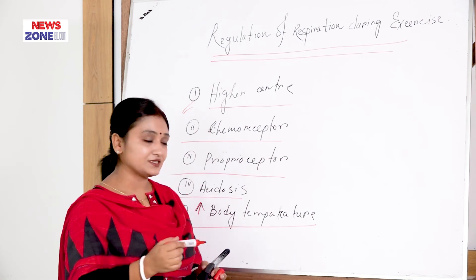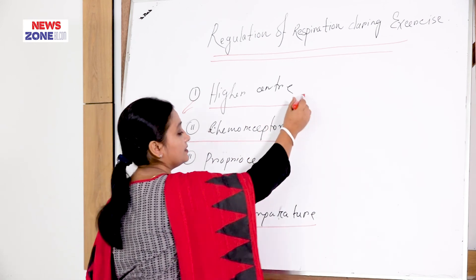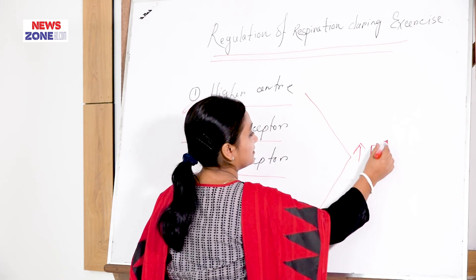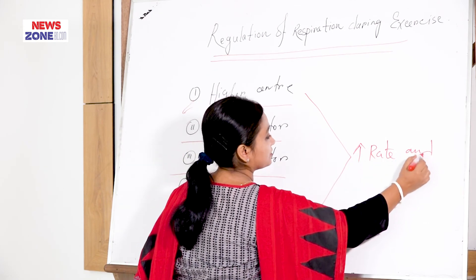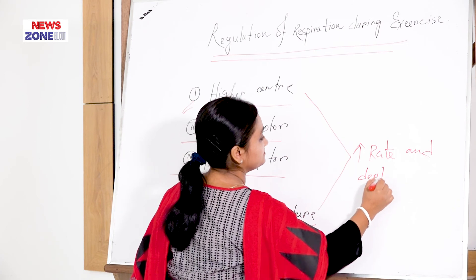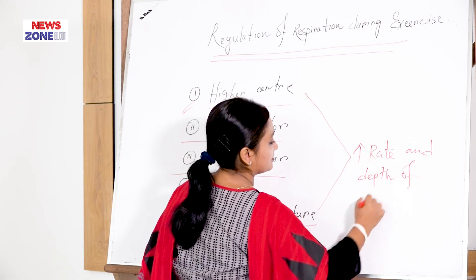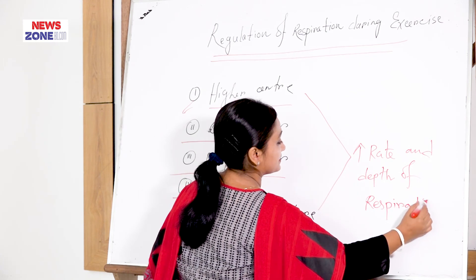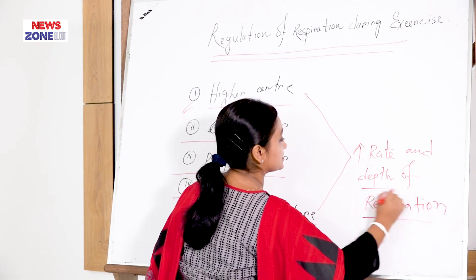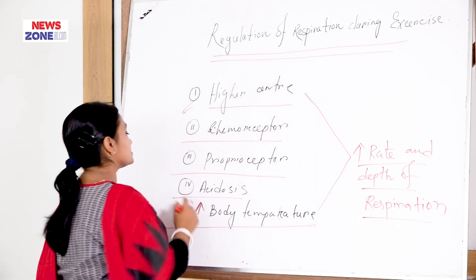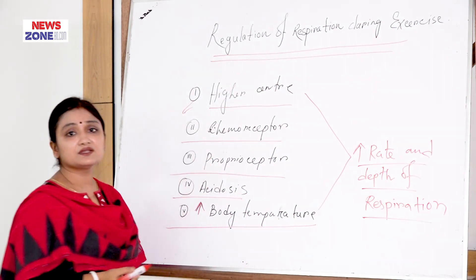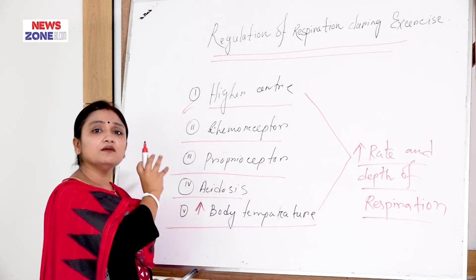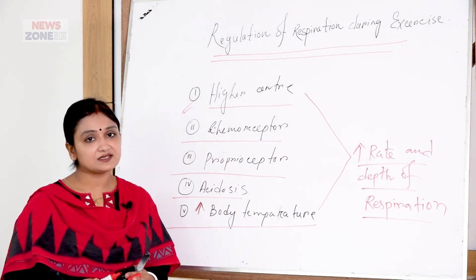We have now learned how the rate and depth of respiration increases during exercise. The rate and depth of respiration is increased during exercise via signals from different parts of the body and different changes in the body. Thank you very much.